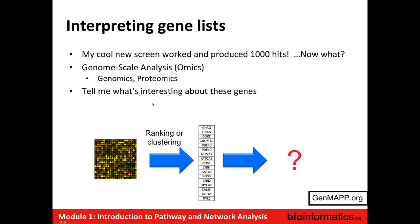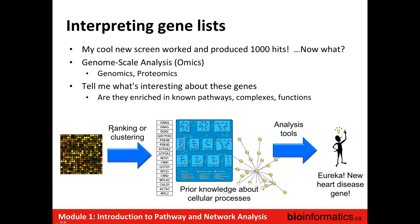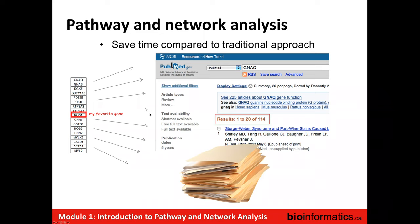Usually after you rank the data or cluster it somehow and you get this gene list, one of the main ways that we can try to answer this question is to find out if they're enriched in known pathways, complexes, or functions. Can we learn anything about cellular mechanism based on known information by just automatically cross-referencing it? Using automated methods basically saves time compared to a traditional approach where you'd have to go through the genes one by one and do a literature search on each one.